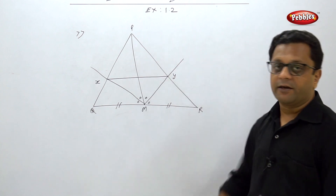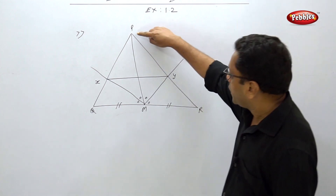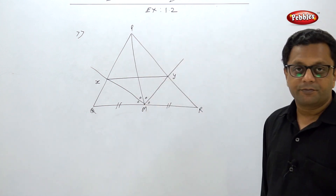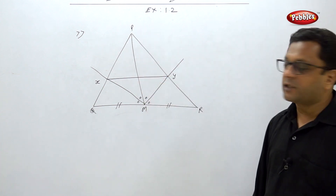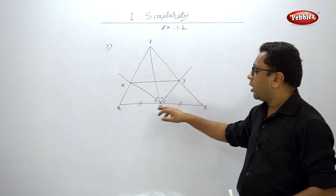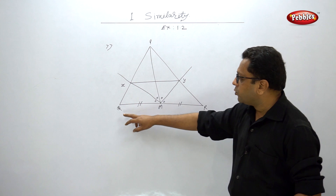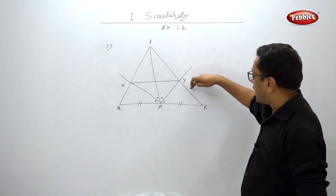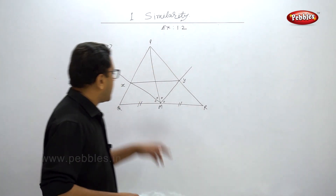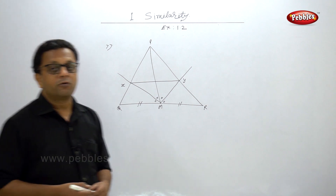In triangle PMR, MY is the angle bisector, so PY/YR = PM/MR. Since PM is the median, QM = MR, so PM/QM = PM/MR. Therefore PX/XQ = PY/YR, and hence by the converse of BPT, XY is parallel to QR.